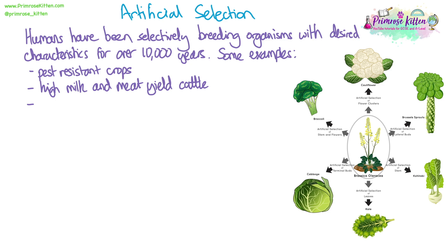High milk and meat yield cattle — cattle that are bred to give us a lot of meat, so they have large muscles, or a high milk yield. Dogs that can hunt or race, or are good for detecting things by smell. Equally, horses have been bred for their strength, for racing, and for pulling farm equipment. There are loads of examples.